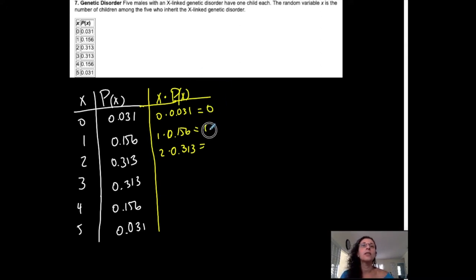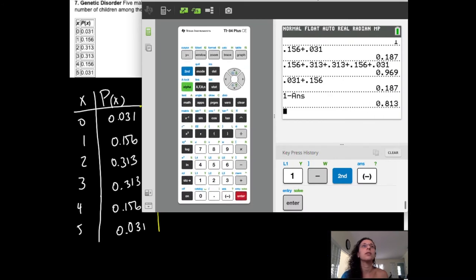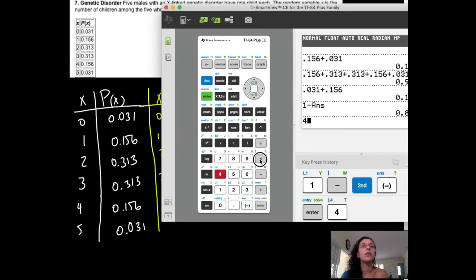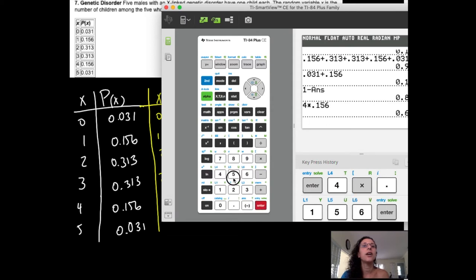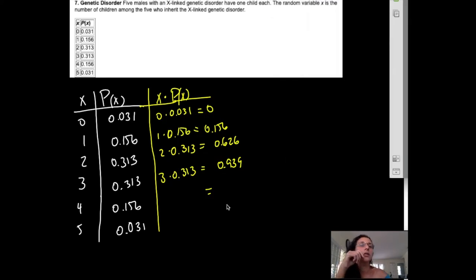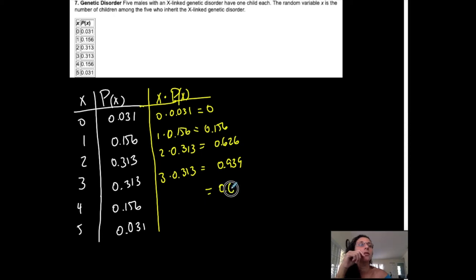This is 0, this is 0.156, 0.626. 3 times 0.313 is 0.939. Let me check my numbers. Let me just put it in my calculator now. 4 times 0.156, and 5 times 0.031. So this one is 0.624, and this one is 0.155.